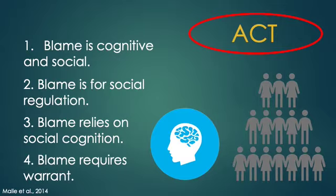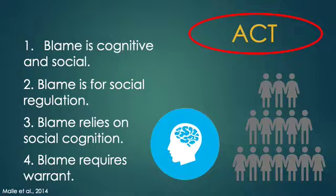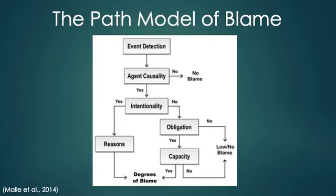Third, blame is a component that makes use of humans' cognitive tools for behavior modification, which are based in social cognition — including evaluating people's intentions and motivations. Finally, the model stipulates that because blame is so powerful and high-stakes and can damage people's lives, blame judgments typically require warrant.